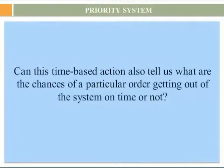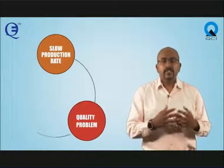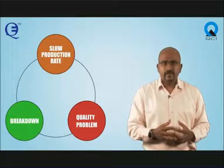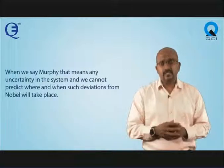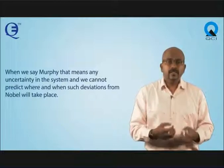Can this time-based action also tell us what are the chances of a particular order getting out of the system on time or not? This is where the right corrective action can take place. It can happen that at a particular time there is a slow production rate, a quality problem, or a breakdown — any variation can be termed as Murphy. Murphy means there is uncertainty in the system, and we cannot predict where and when such deviations from normal will take place.